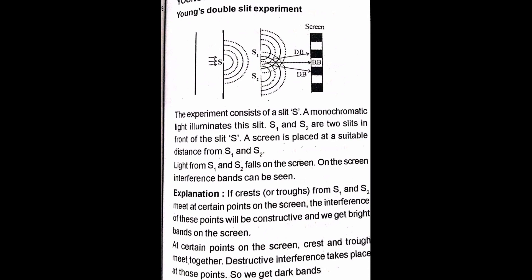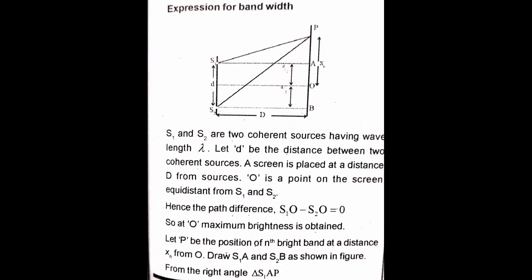Now we can derive the expression for bandwidth. S₁ and S₂ are two coherent monochromatic light sources kept at a distance d (small letter d) apart. O is the point on the screen equidistant from S₁ and S₂. Capital D is the distance between the source plane and the screen.